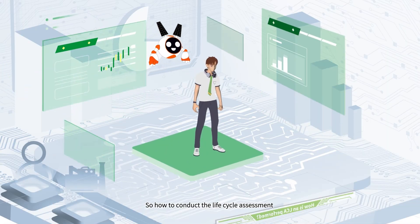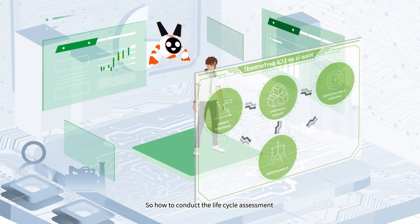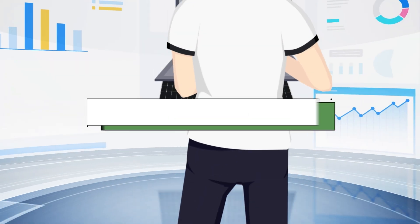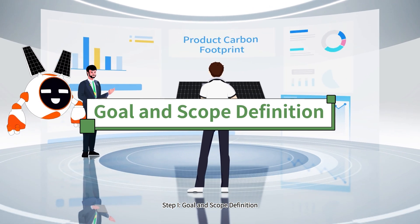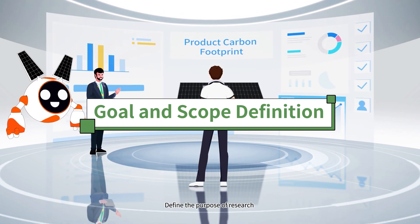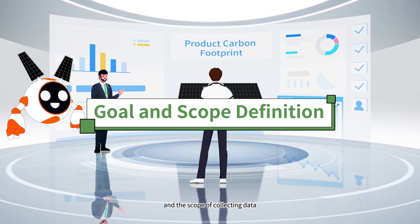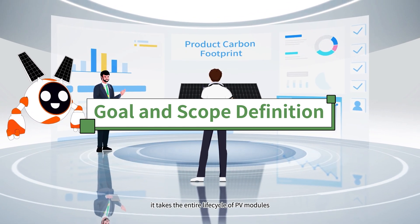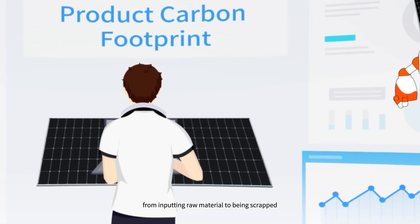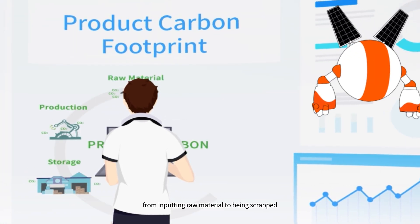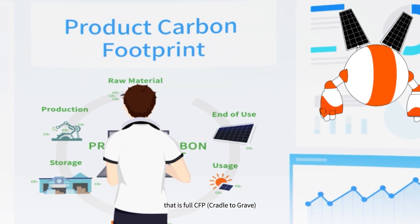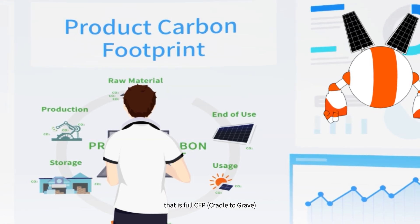So, how to conduct the lifecycle assessment for carbon footprint? Step 1: Goal and Scope Definition. Define the purpose of research and the scope of collecting data. It takes the entire lifecycle of PV modules, from inputting raw material to being scrapped, as the object of study — that is, full cradle to grave.